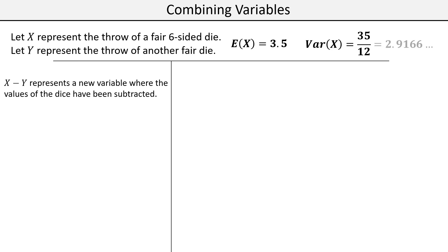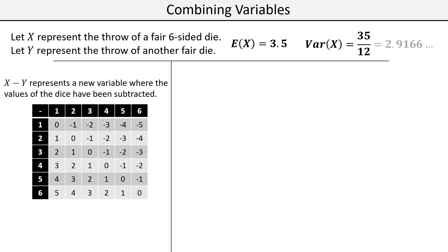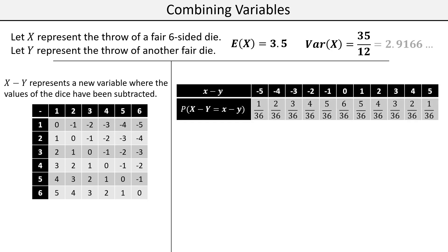Let's see what happens when we subtract. The sample space for X minus Y looks like this, and the probability distribution comes out with another symmetrical distribution. By symmetry we'd expect the expectation to be zero, and indeed the expectation is zero. As for the variance, a lot of students expect the variance to be zero — but a variance of zero means all the values were the same, no variability, no spread in the outcomes.